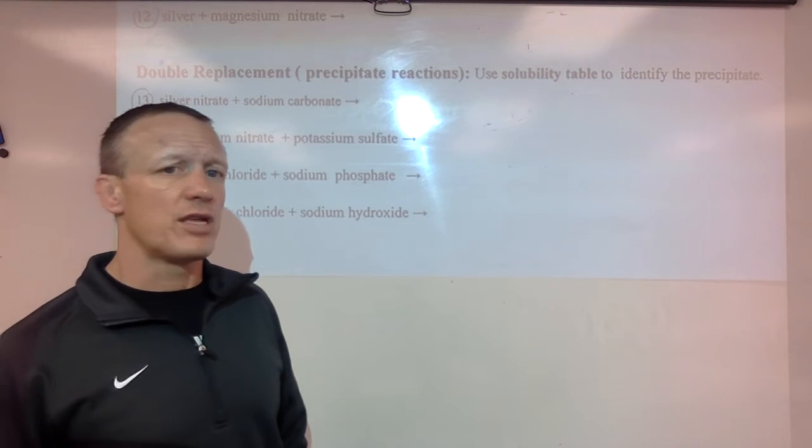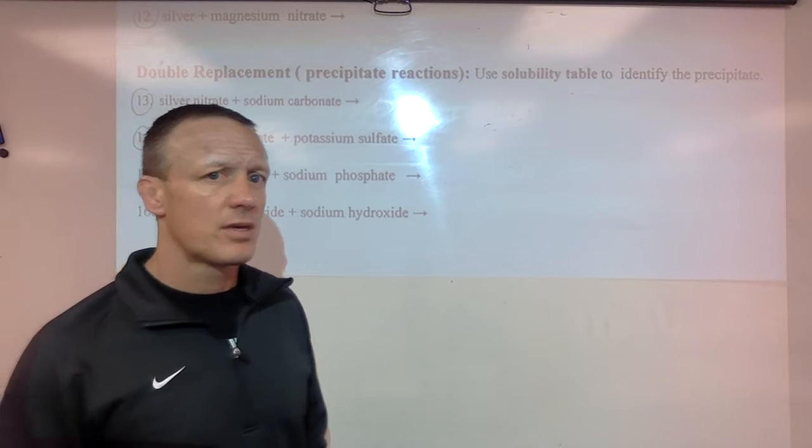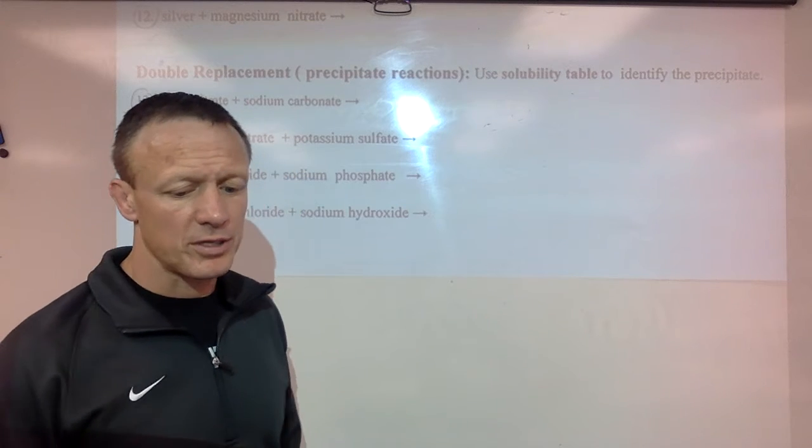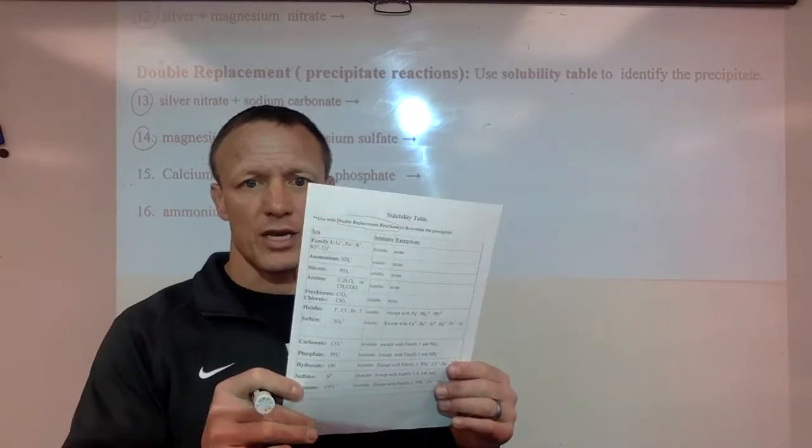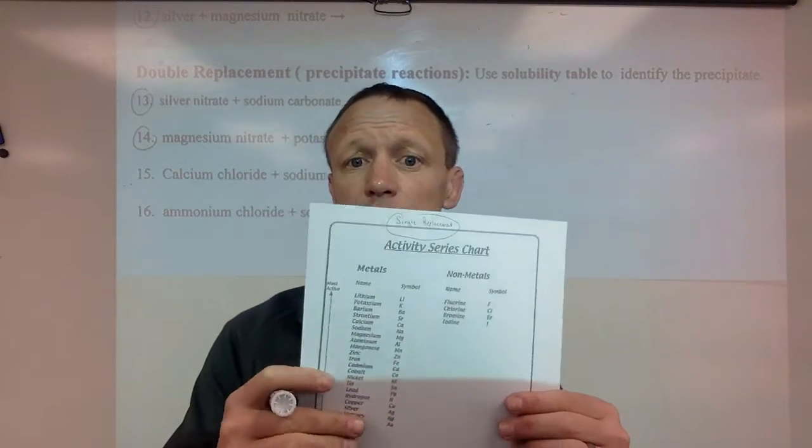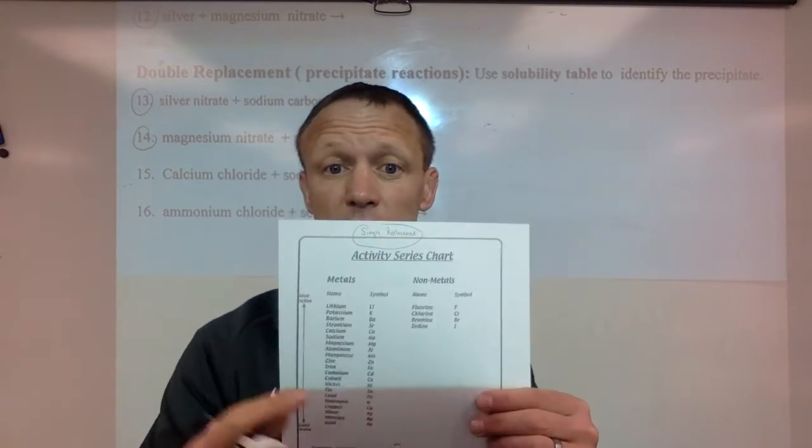This is the double replacement part of the predicting product sheet. So we'll just do double replacements here. Now that requires us to look at the other side of this. So one side has your activity series which you use for single replacements. Don't ever use this for double replacements.